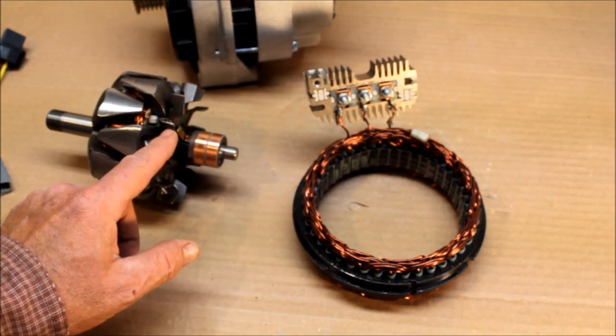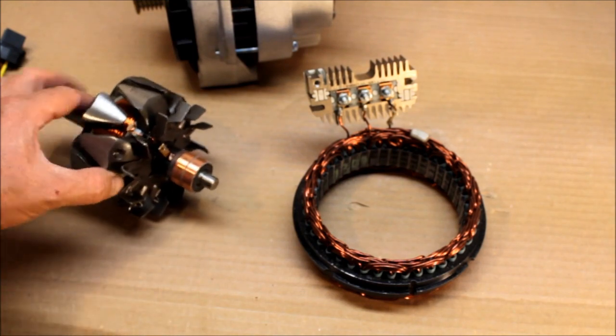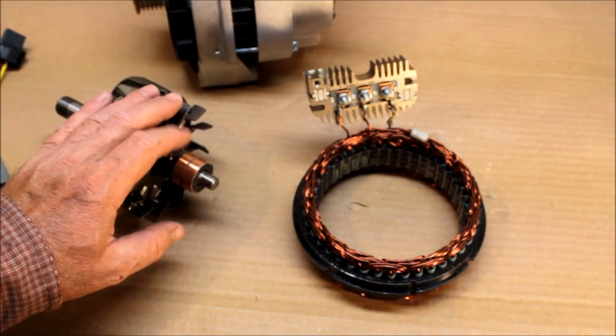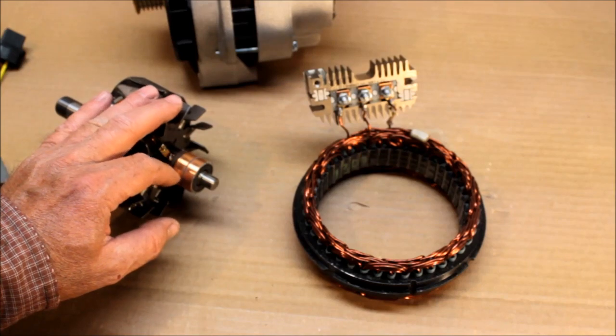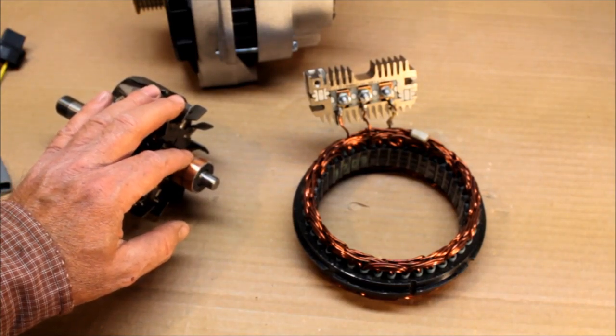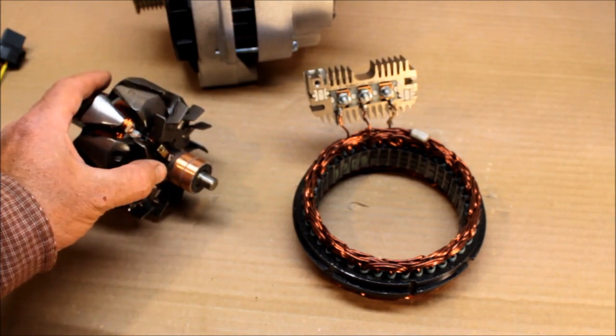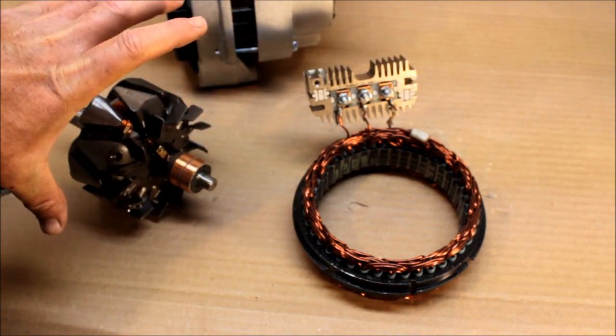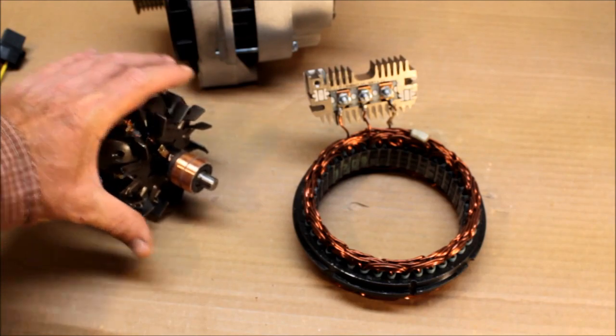What the voltage regulator basically does is you ground one of your brushes here, and then you send varying positive power to the other brush. That'll either make this a big electromagnet or a small electromagnet, and then that affects output when this spins inside of here.